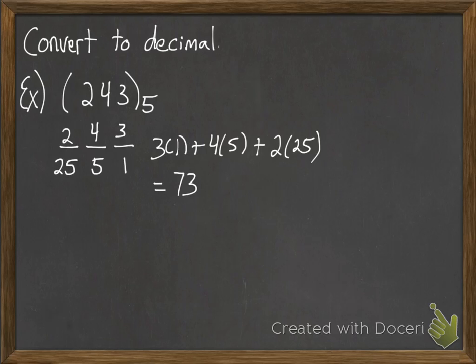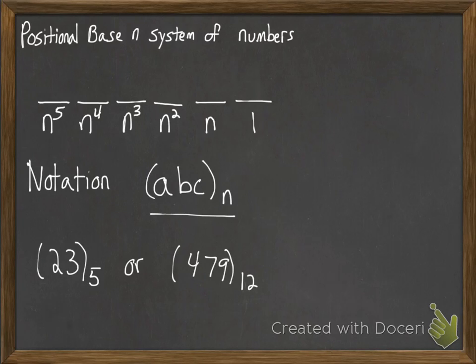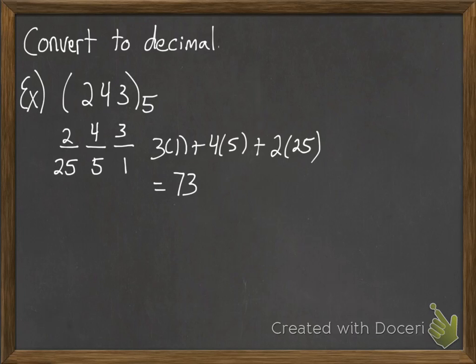Now before we go any further here, a couple little notes about this system. You're never going to use symbols bigger than the base. So if our base is 5, in the example over here, the symbol 5 makes no sense, because to write 5 in base 5, you'd write 10 using the positional system. That would be 0 ones and 1 five. That's equal to the number 5. Same thing with 6; we wouldn't have a symbol for 6. That would be 11.